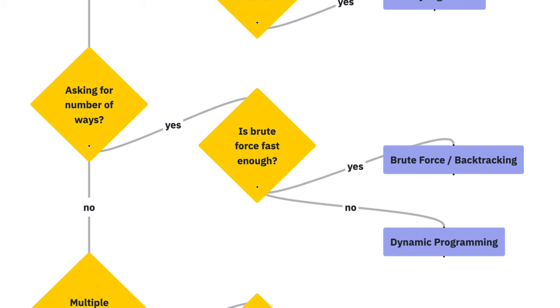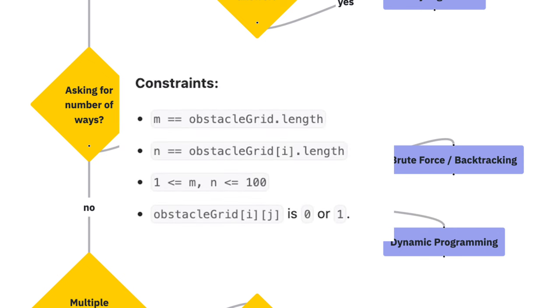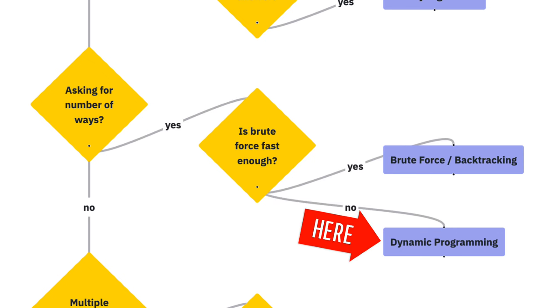We will then refer to our flowchart's counting node for guidance. It's important to note that using a brute force approach would be inefficient here as the grid size scales to 100. Therefore, we'll navigate to our flowchart's dynamic programming node.